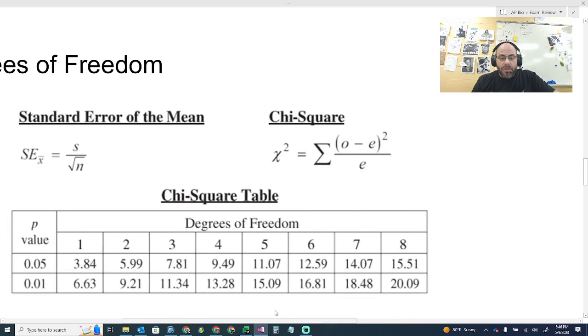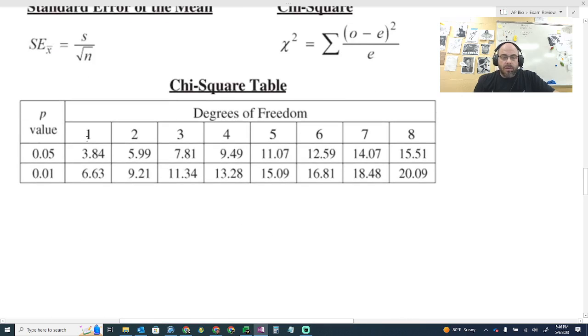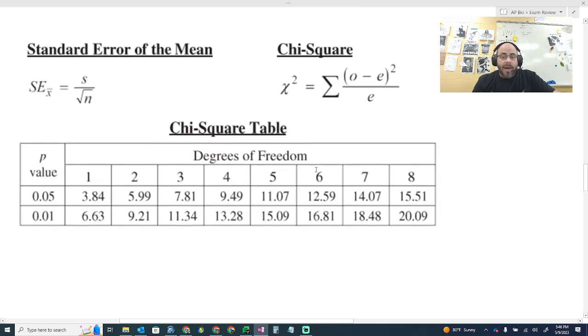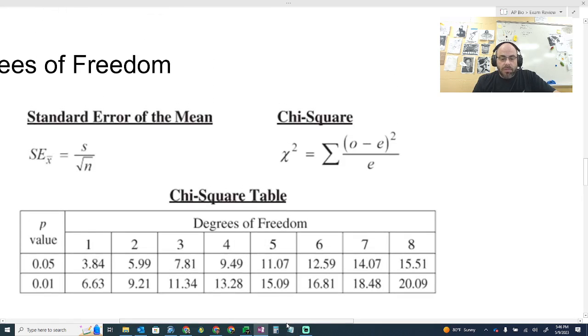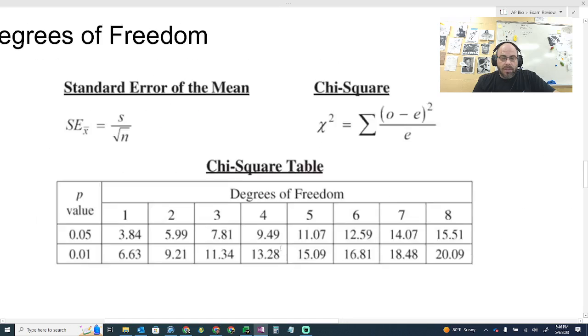And you're going to compare your chi-square value to your critical value. Your critical value is going to be determined on this table right here. It's going to be based on a number of things. Let's say that I have five things that I have to add together. If I have five things, well, then I have four degrees of freedom, which is what I have here for degrees of freedom. How do I determine that?